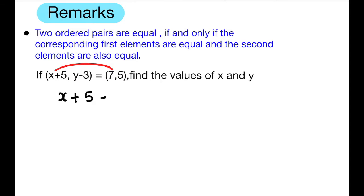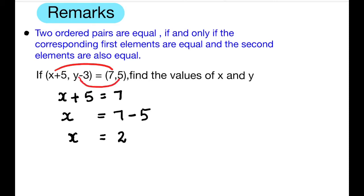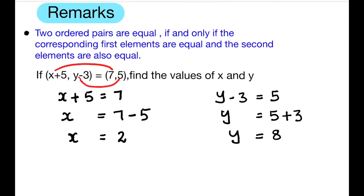Solving the equation x + 5 = 7, we get x = 7 − 5. When plus 5 is transposed to the right-hand side it becomes minus 5, so x = 2. For y − 3 = 5, solving the equation: y = 5 + 3. When minus 3 is transposed to the right-hand side it becomes plus 3, so y = 8.